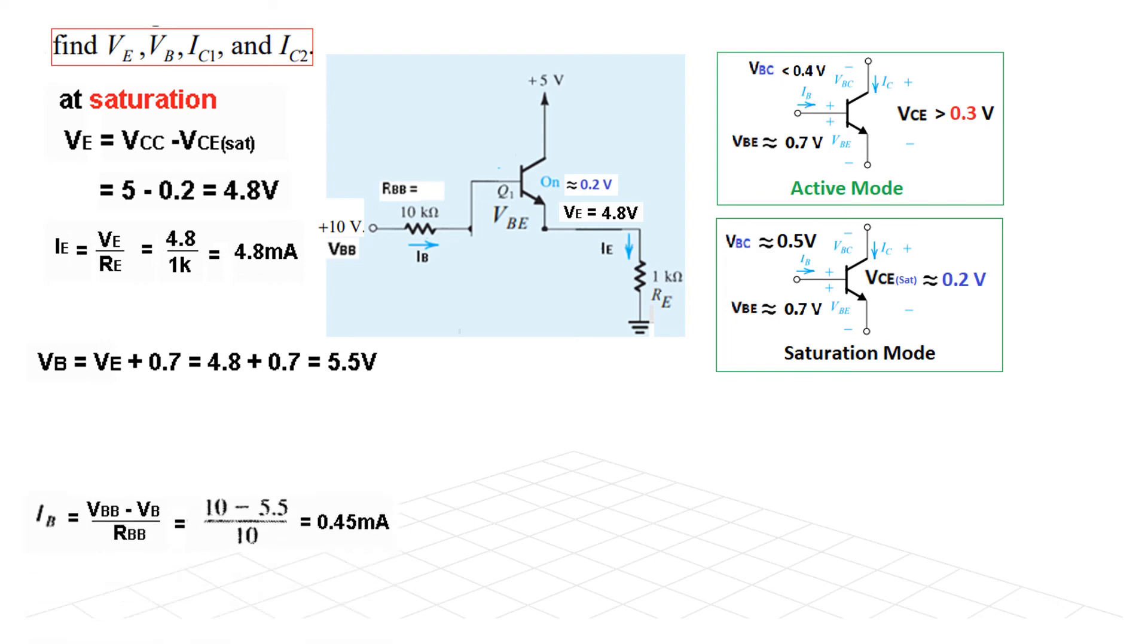Now we need to find the currents. First of all, IB. If you look from the circuit, 10 volt minus this voltage VB divided by this resistor. So VBB minus VB divided by RBB, 10 minus 5.5 divided by RB. So the answer is 0.45 milliampere.